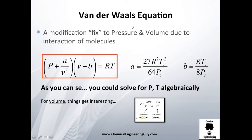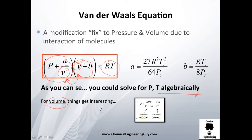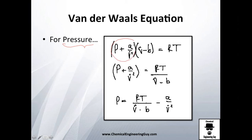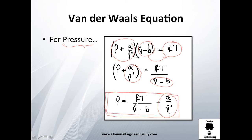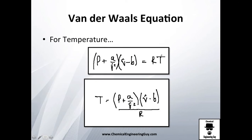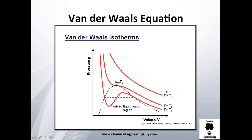With the Van der Waals theory covered, let's look at solving the equation. Solving for pressure is relatively straightforward: rearrange so that the pressure correction term moves to the other side. Solving for temperature is even simpler — just send R and the volume correction term to divide, and you have your temperature. One important note: whether you're working with a gas or a vapor affects which curve you reference.